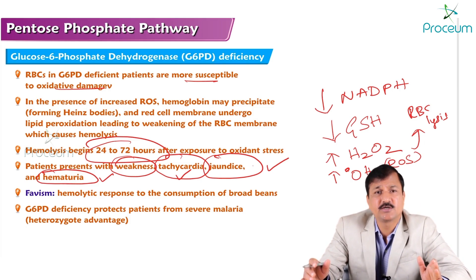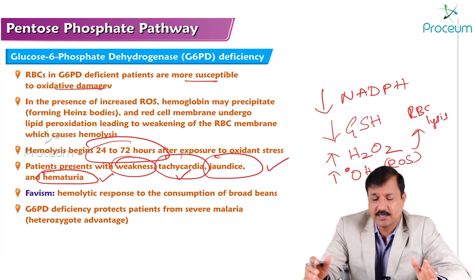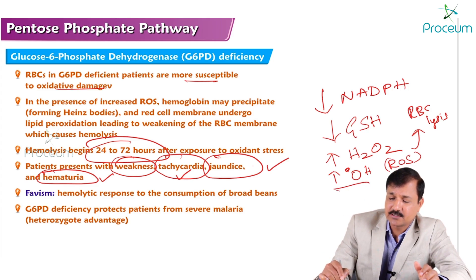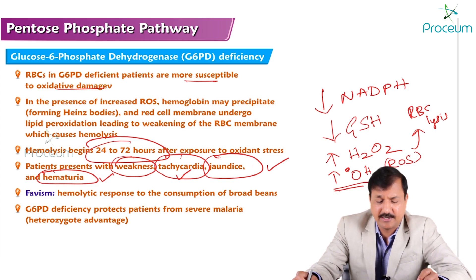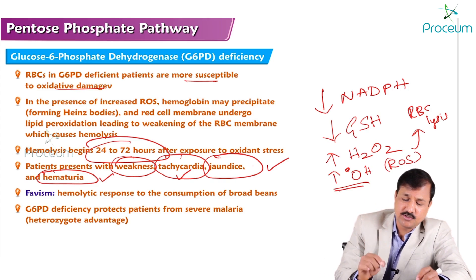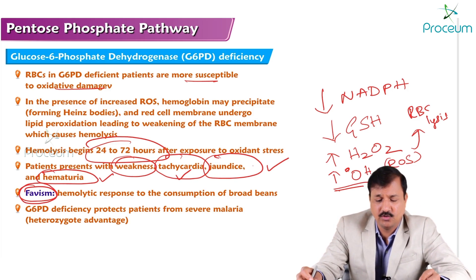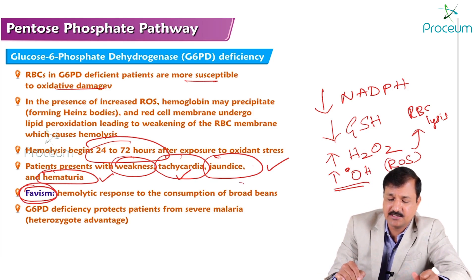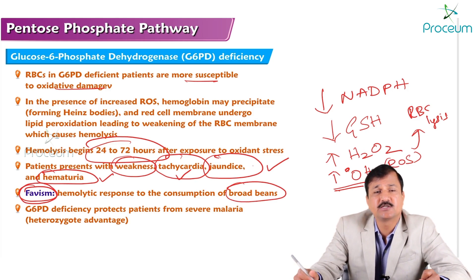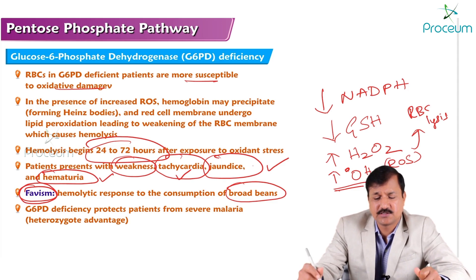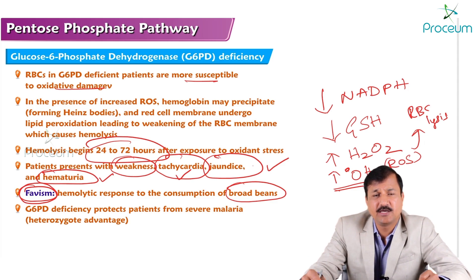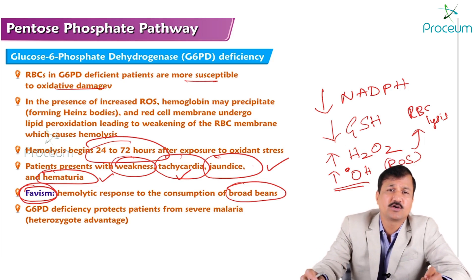There is also a condition called favism. Favism is a hemolytic response to consumption of broad beans or fava beans, seen in patients with glucose-6-phosphate dehydrogenase deficiency. If the patient has G6PD deficiency and consumes fava beans, which release more oxygen radicals, that will lead to a hemolytic crisis.